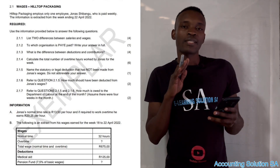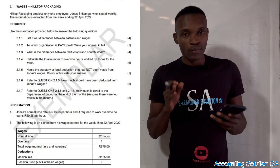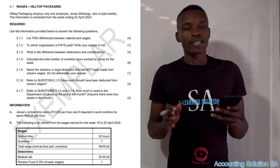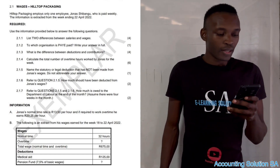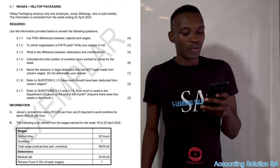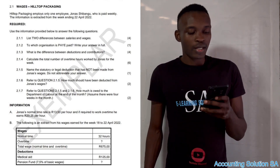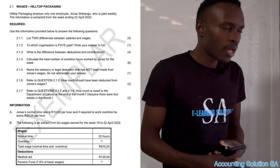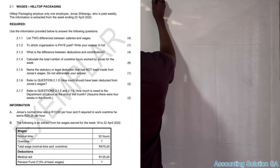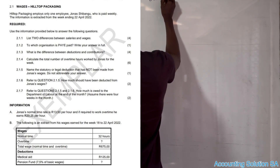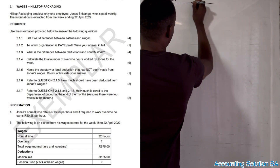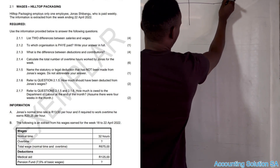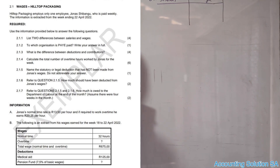Let's look at the question paper and answer it. Remember, it's the first one so we start with a basic question so you can understand the differences. Question 2.1.1 says: use the information provided below and answer the following. They want us to list two differences between salaries and wages. Let's write it in a table format to make it easy.